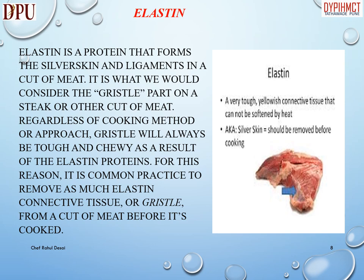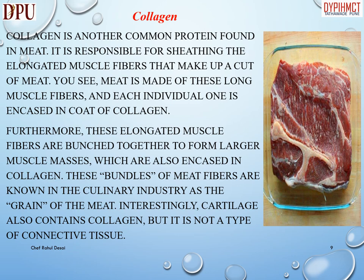Elastin is a protein that forms the silver skin and ligaments in a cut of meat. It is what we would consider the gristle part on a steak or other cut of meat. Regardless of cooking method or approach, gristle will always be tough and chewy as a result of the elastin proteins. For this reason, it is common practice to remove as much elastin connective tissue, or gristle, from a cut of meat before it is cooked.